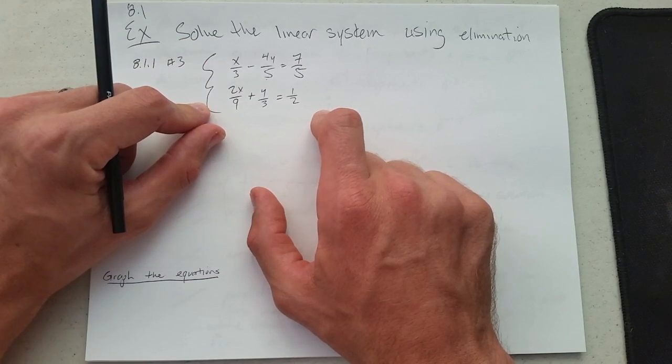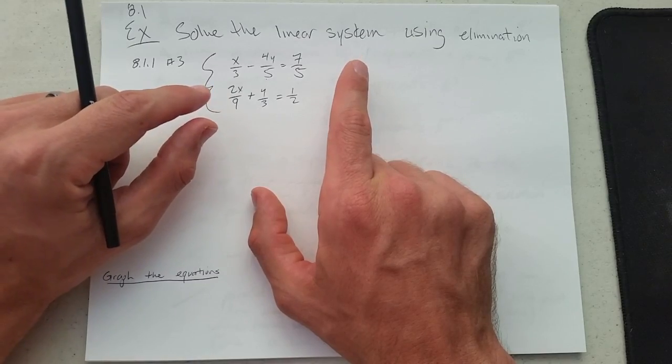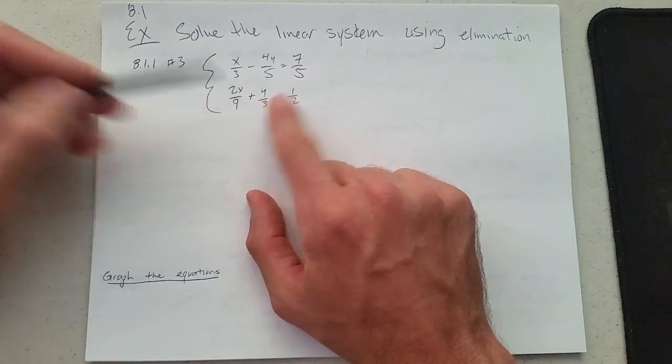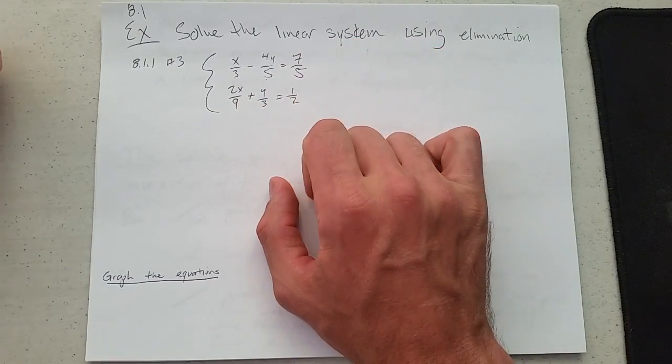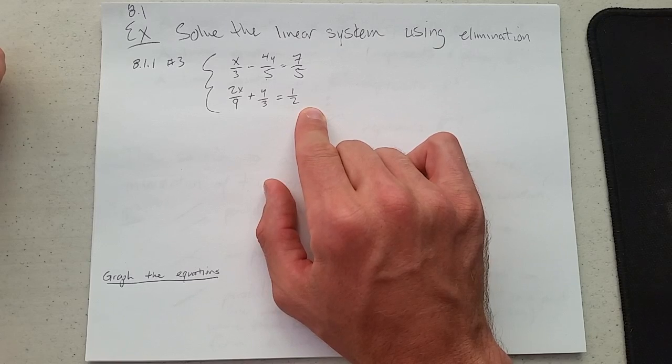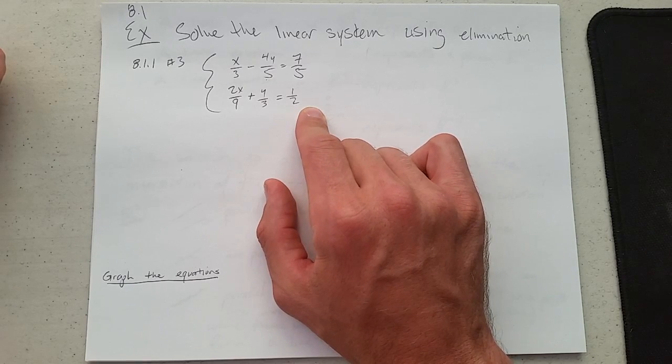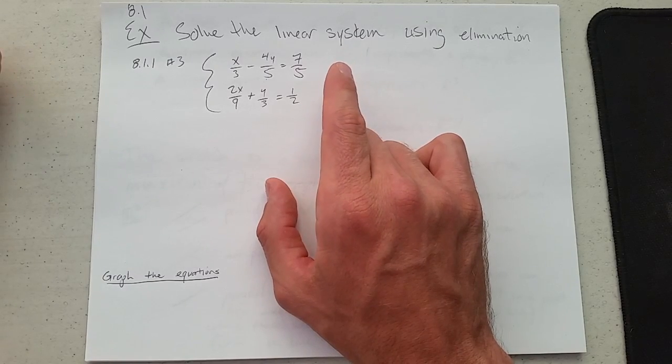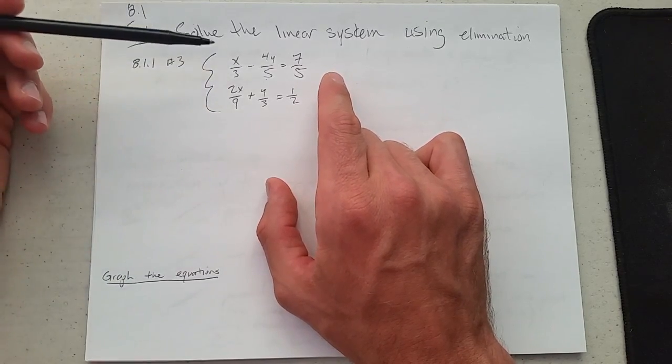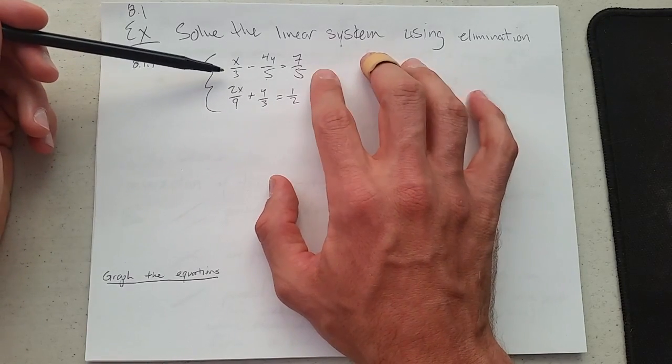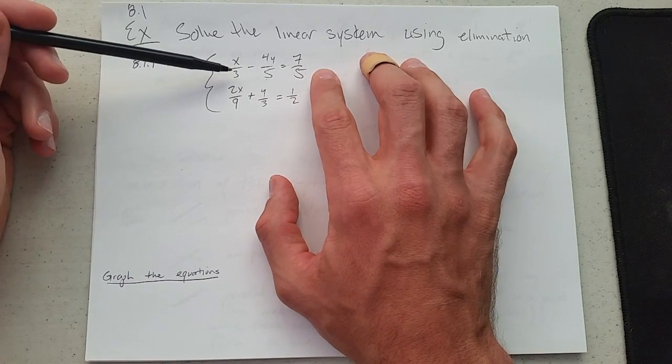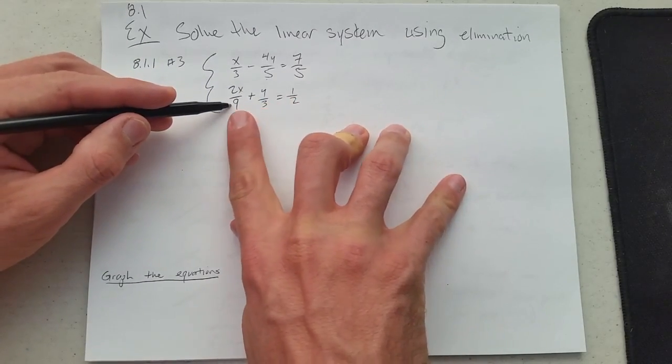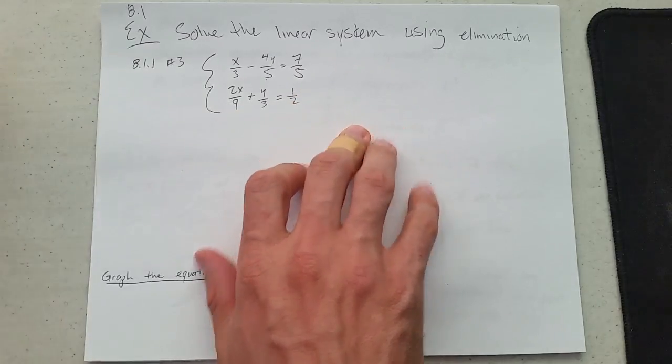How many equations do we have? Two. How many variables? We have an x and a y—this is a 7, not a z—so we're in two dimensions. We also have fractions, which I don't particularly like. How do we get rid of fractions? Multiply by the least common multiple of all denominators. Up here, we'll multiply by 15 (from 3 and 5). Down here, we'll multiply by 18 (from 9 and 3, times 2).